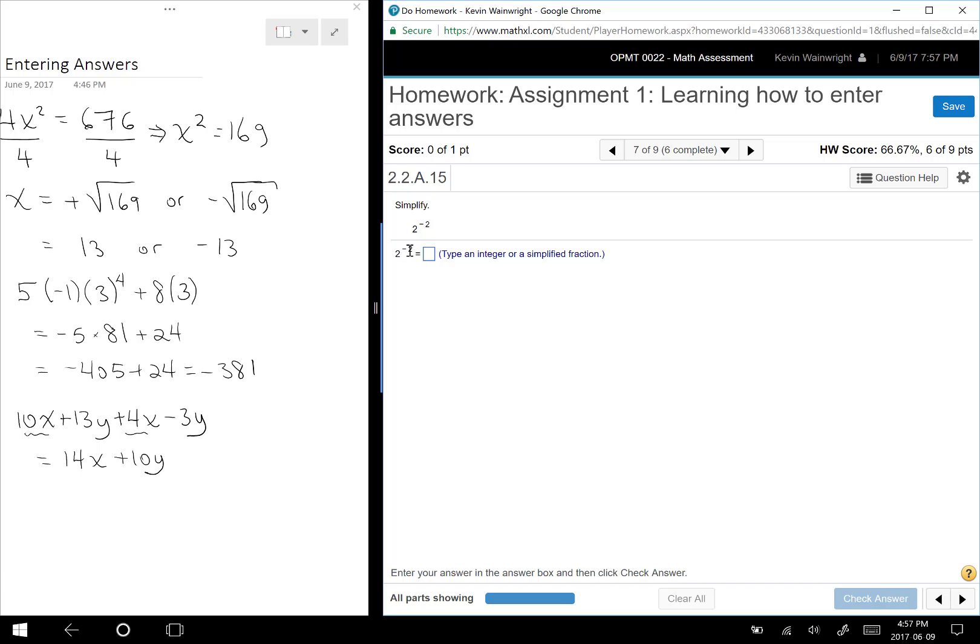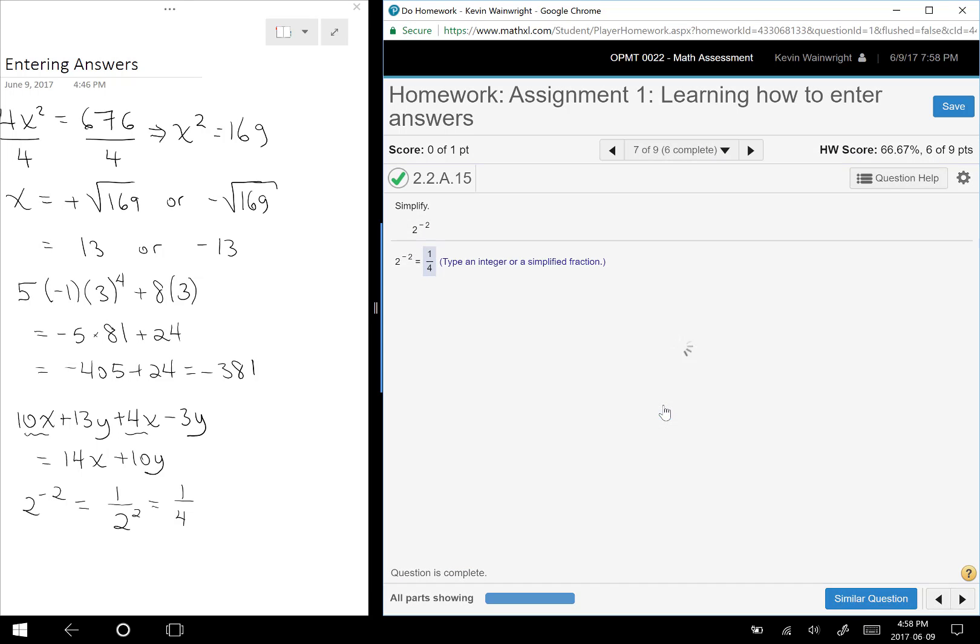Next question here. 2 to the power of negative 2. So 2 to the minus 2. What that really means, a little bit of a brush up here. If there's a negative exponent, that means it's on the bottom. And 2 squared is 4. Type as an integer or simplified fraction. Let's put this in fraction form. So that's 1 over 4. So if you click here, it gives you the option to put in a fraction. So 1. Use the down arrow over 4 and check my answer.